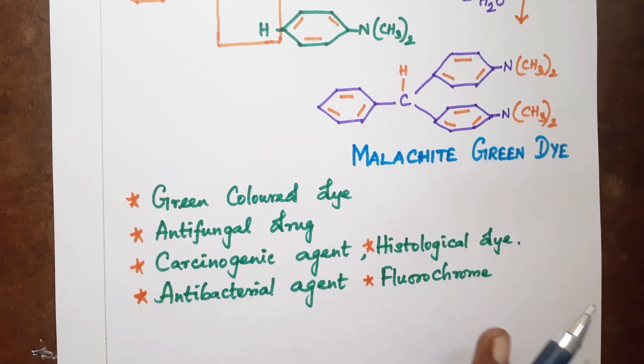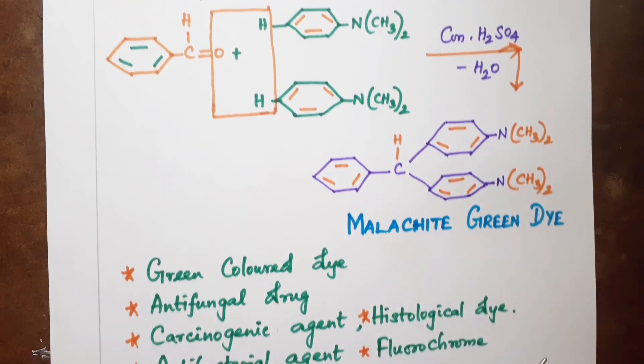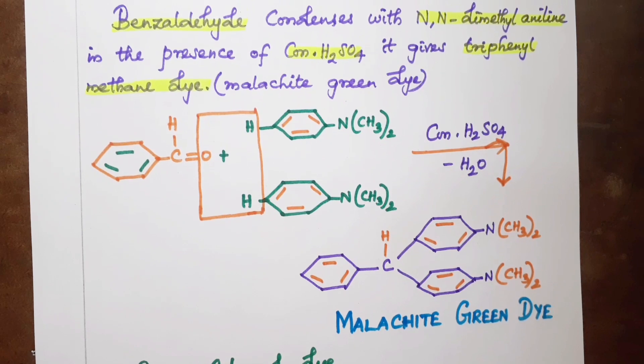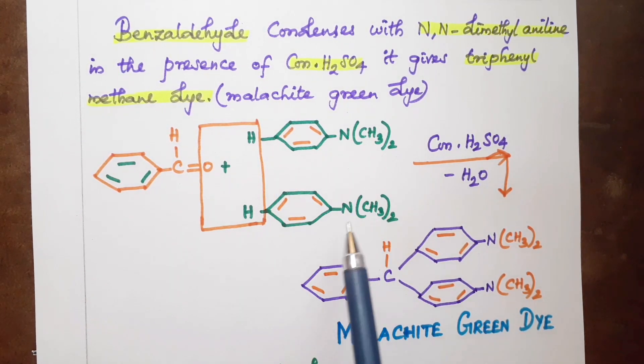Malachite green dye is a triphenylmethane dye. These are its important properties. The preparation involves the condensation of benzaldehyde with NN-dimethylaniline to form the structure of malachite green.